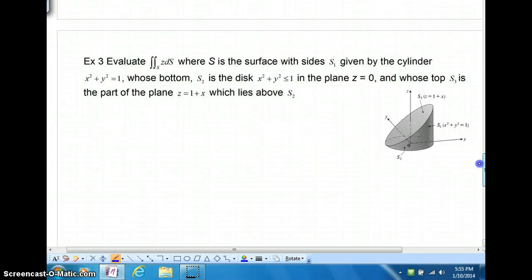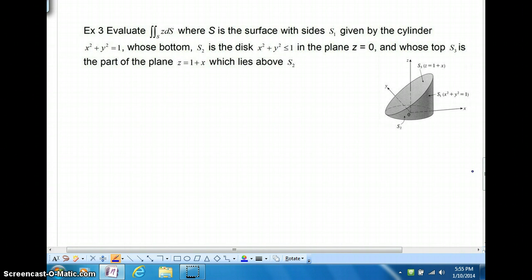To see what we're talking about most immediately, look at example three. Example three is a surface that is not simply defined. It's not given by just one parametric representation, nor with one simple equation. Rather, there are three components to it. You can see that there is a cylinder, x squared plus y squared. The bottom is a disk, a circle with filled in x squared plus y squared less than or equal to one on the plane z equals zero. And then there's a slanting top, which is a plane z equals one plus x. That would lie above that disk, s sub 2.